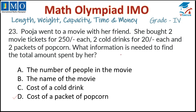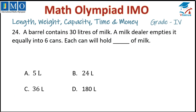When the cost of a packet of popcorn is given, then we will know the total amount spent by her. Question 24: A barrel contains 30 litres of milk. A milk seller empties it equally into 6 cans. Each can holds how much milk? Total milk is 30 litres divided by 6. 6 fives are 30, so each can holds 5 litres. Tick option A.